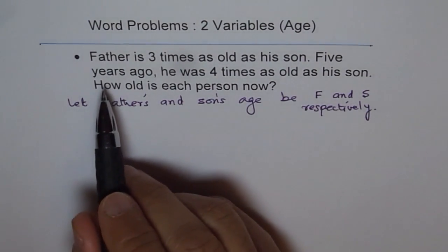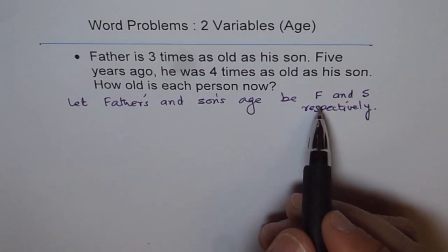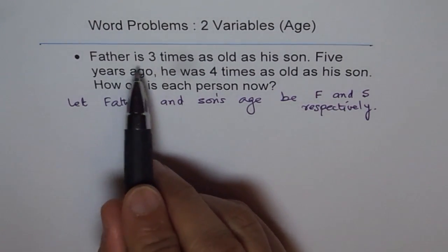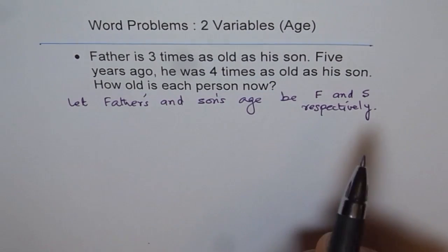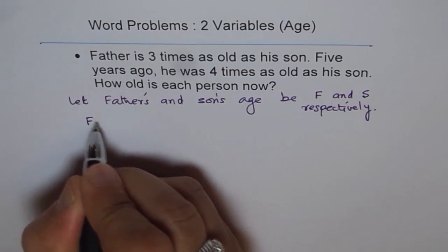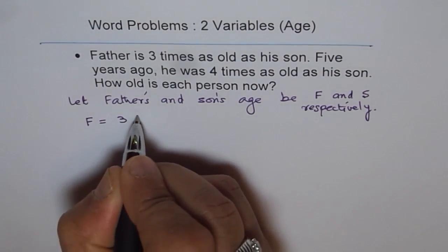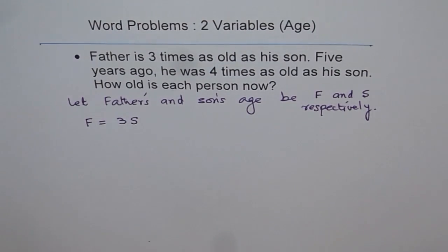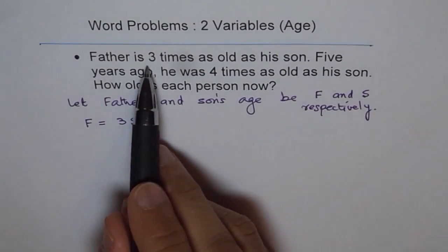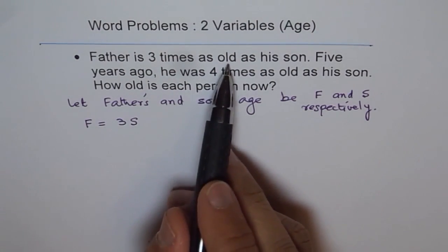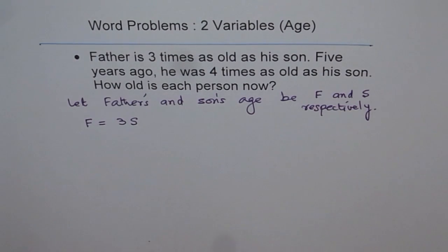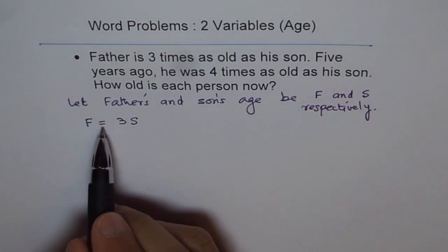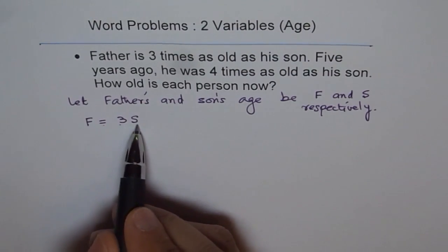Now let's make equations using our variables. Father is three times as old as his son. That means f equals three times son, so f is equal to 3s.